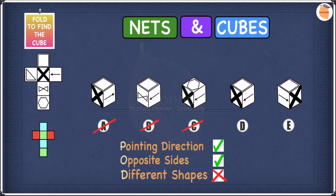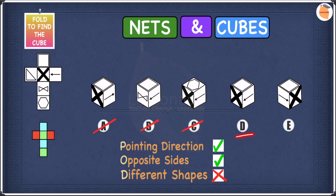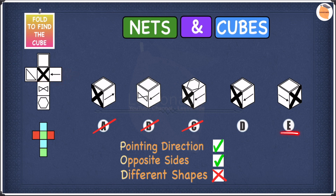Even after applying POD — pointing direction, opposite sides, and different shapes — we're still left with D and E. When options remain after POD, we apply common sense. Looking at the net, the arrow is to the right of the X. But in E the arrow is to the left of the X, so it's in the wrong position — we can cross off E. That means our answer is D.